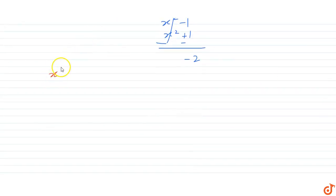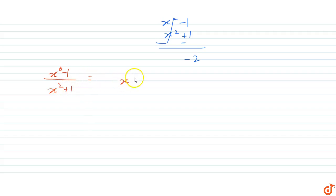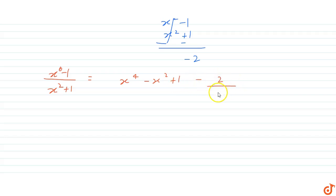So x to the power 6 minus 1 divided by x square plus 1 equals x to the power 4 minus x square plus 1 minus 2 divided by x square plus 1. Now we have to integrate this function with respect to dx.